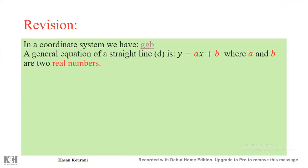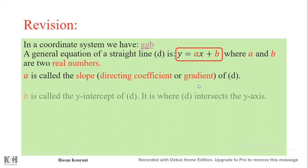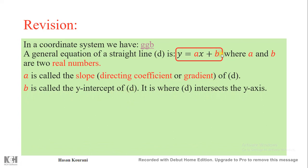In a coordinate system, a general equation of a straight line is y = ax + b, where a and b are two real numbers. 'a' is called the slope, or directing coefficient, or sometimes gradient of the line, while 'b' is called the y-intercept — it's where the line intersects the y-axis.